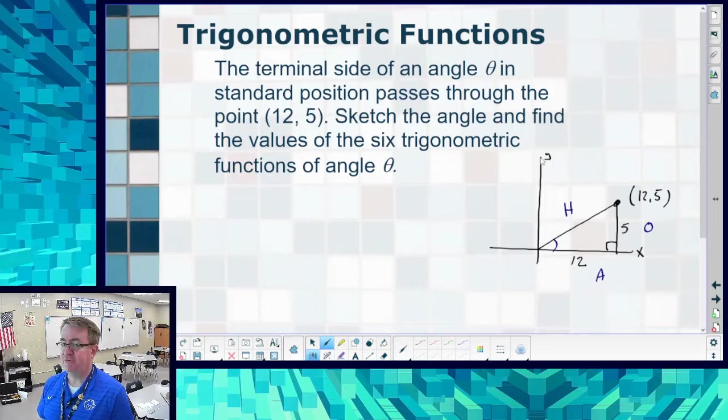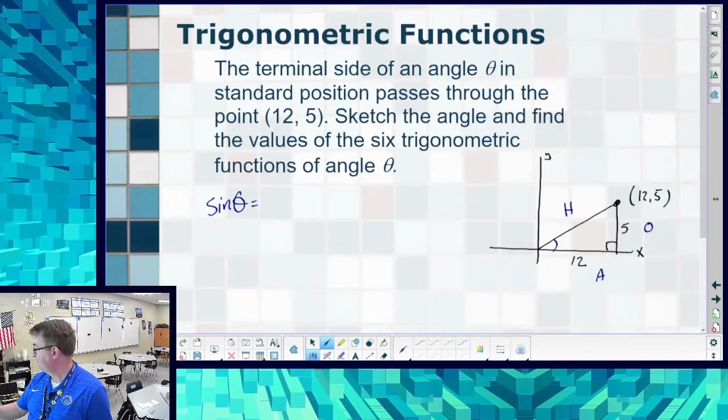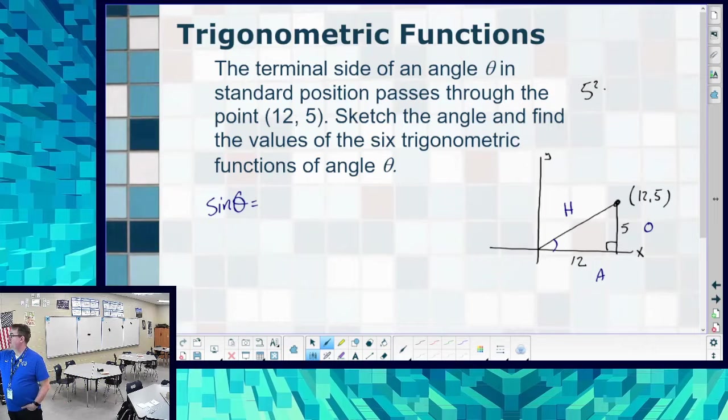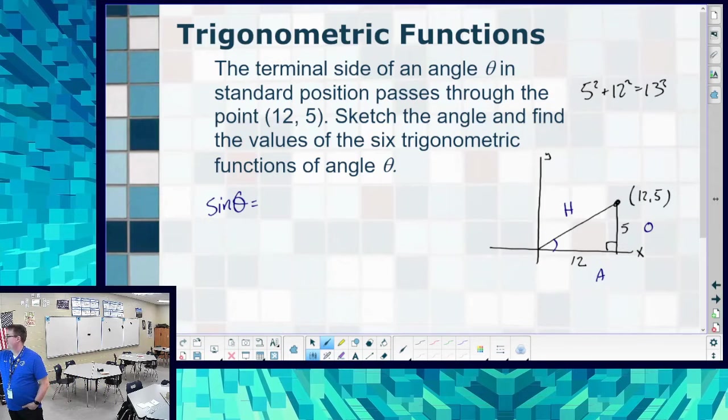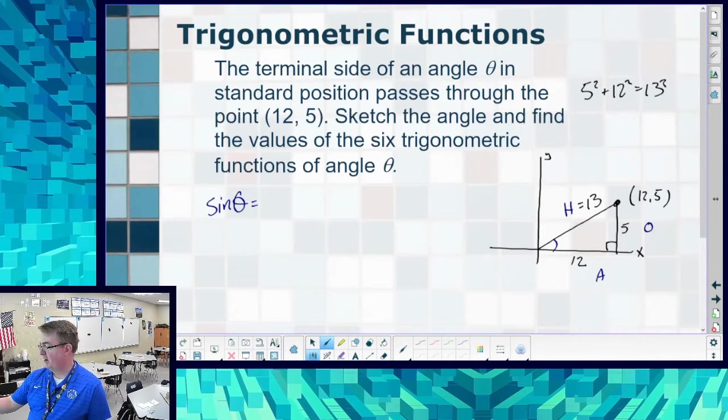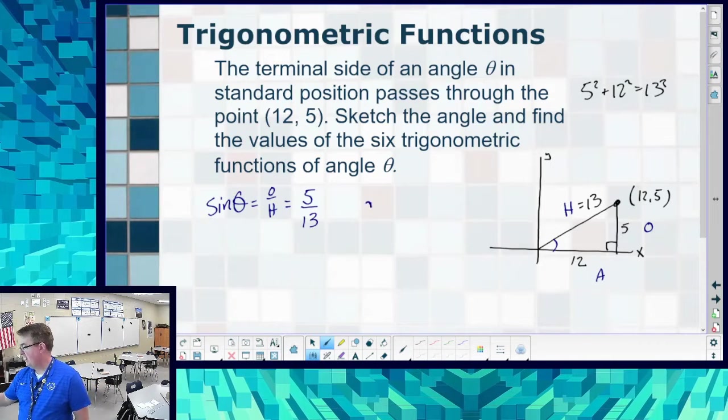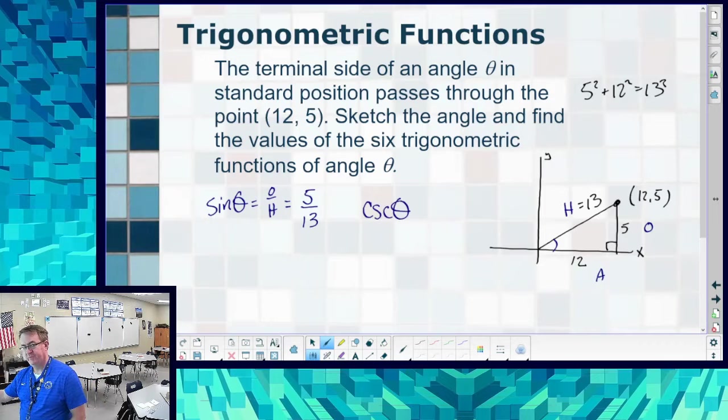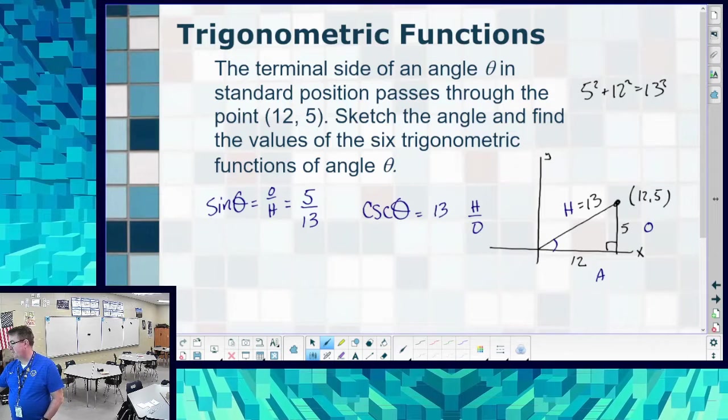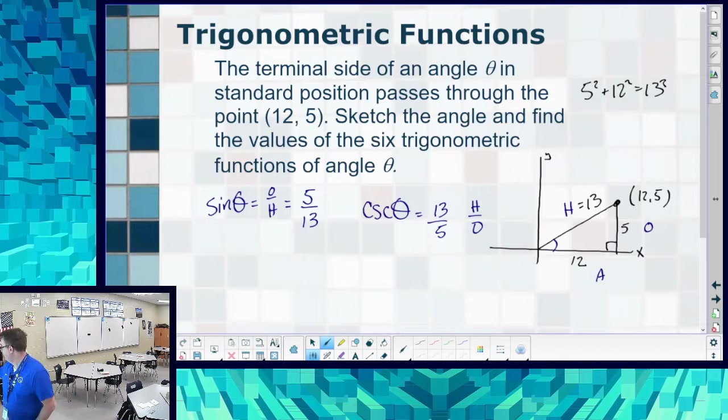Label this: there's your hypotenuse, my opposite side, here's my adjacent side. And so now it's just write out the six trig functions. Sine theta, you're just going to go opposite over hypotenuse. What's my hypotenuse? Please tell me you remember it's a Pythagorean triple, 5, 12, 13. So sine is opposite over hypotenuse, so that's going to be 5 over 13. So if I ask you for your cosecant, that's the reciprocal of it, hypotenuse over opposite, so that's 13 over 5. And I would write both of them down because every time you write it down, it gets cemented into your head a little bit better.